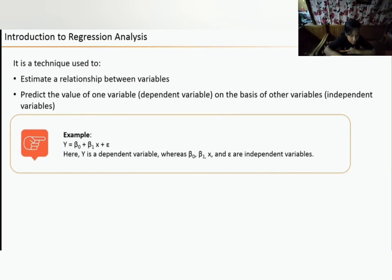However, statisticians are most interested in multivariate data. Regression analysis is used to predict the value of one variable — the dependent variable — on the basis of other variables, the independent variables. In the simplest form of regression, linear regression works with one independent variable. The formula for simple linear regression is shown on the screen.